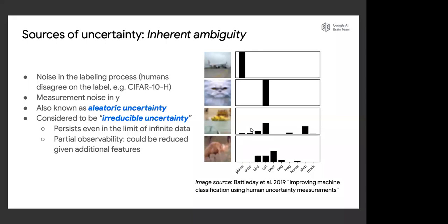This is sometimes called aleatoric uncertainty. A distinct property is that this source of uncertainty is usually considered irreducible — even in the limit of infinite data. However, some of this can be caused by partial observability: if you give additional features, like a higher-resolution image where you can see more clearly, you can reduce this uncertainty. But if that information is unavailable, the label remains ambiguous.